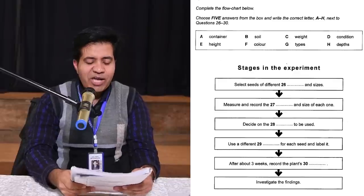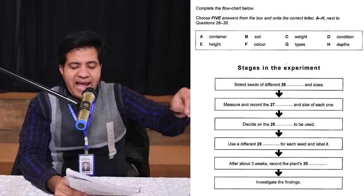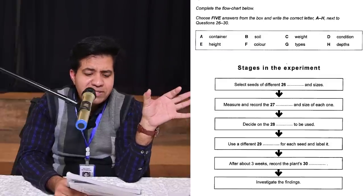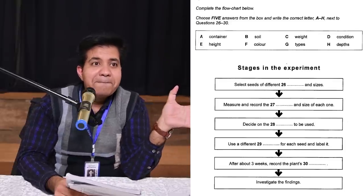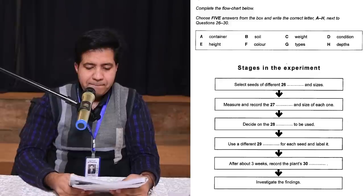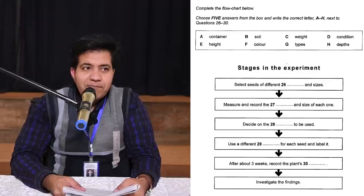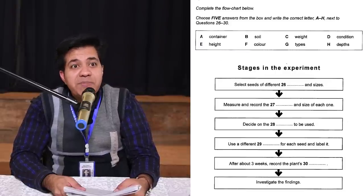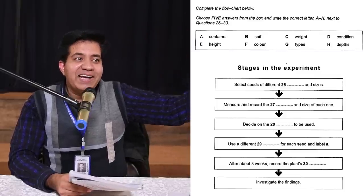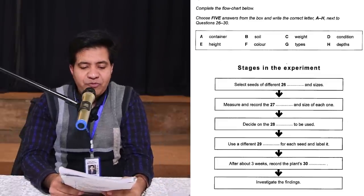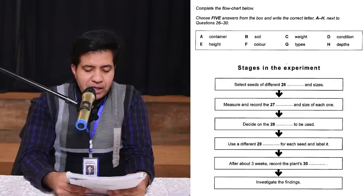Question 27: 'Measure and record the [blank] and size of each one.' When you measure something alongside size, think height, weight, etc. Audio: 'For each seed we need to find out how much it weighs, and also measure its dimensions, and we need to keep a careful record of all that — that'll be quite time consuming.' 'How much it weighs' means weight — so the answer is weight (option F).